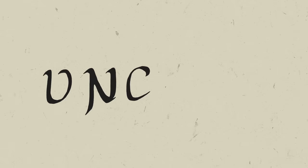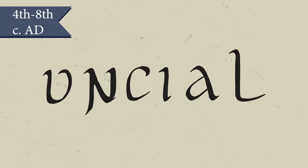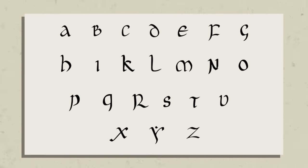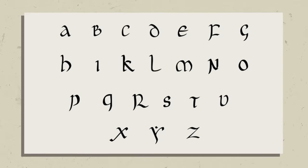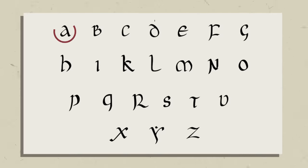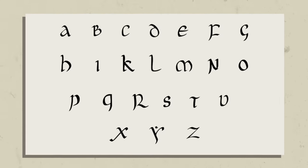The first script we'll look at is the Uncial script. It was used throughout Europe from the 4th century through to the 8th century. It was a majuscule script, but since it was written on parchment or vellum, it used curves, much like Roman cursive. With this script you can start to really see the evolution from the Roman capitals to our lowercase letters. The letters A, D, H, M, and E are all in the middle of transforming.